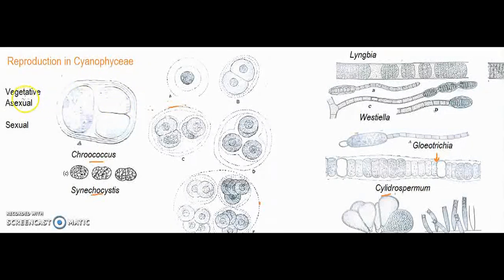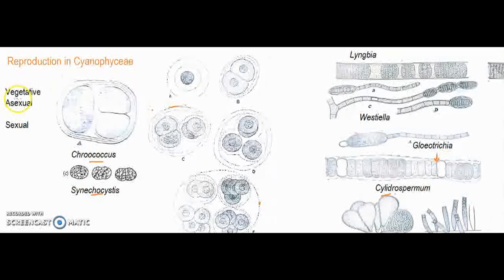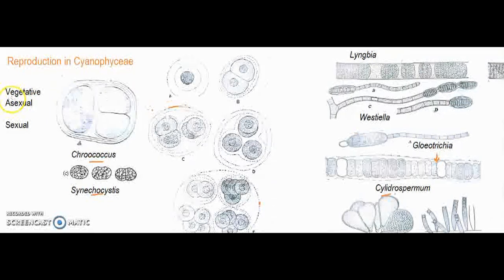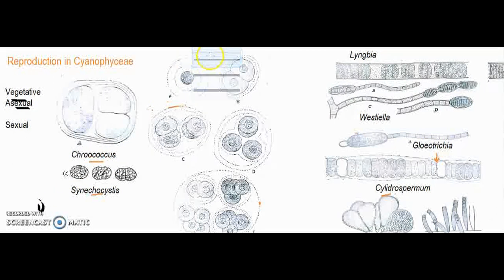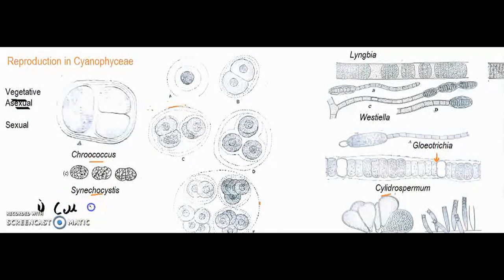Asexual reproduction is literally absent. We will talk about sexual reproduction at the end of the session. Vegetative reproduction occurs with the help of two methods: cell division and fragmentation.